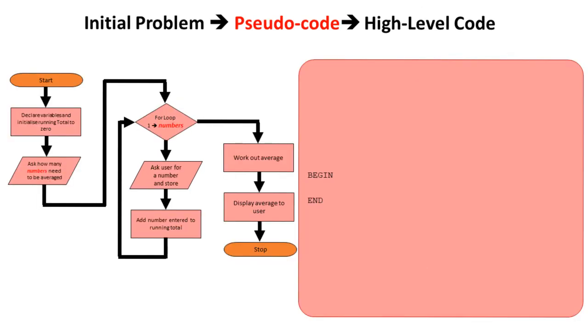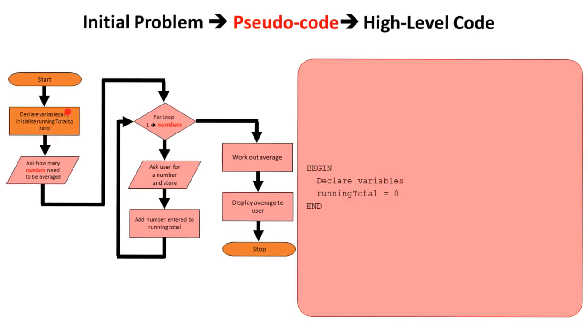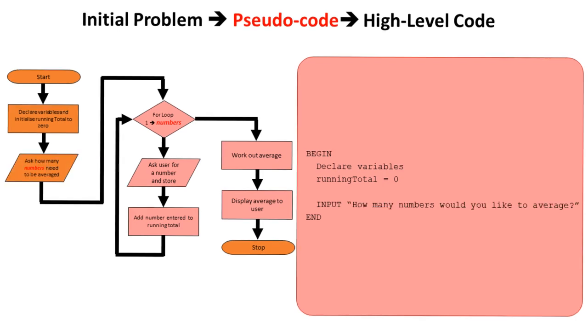Now I've done the flow diagram, it's easy to produce it into pseudocode. So you'll see here I've got my start and end, my begin and end. I want to declare my variables and set a running total to zero. I then want to ask the user how many numbers they'd like to average, and that's here.